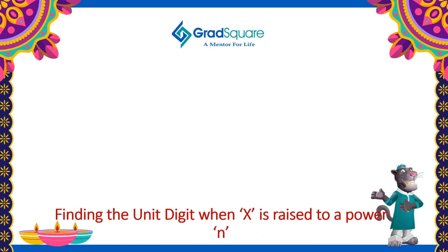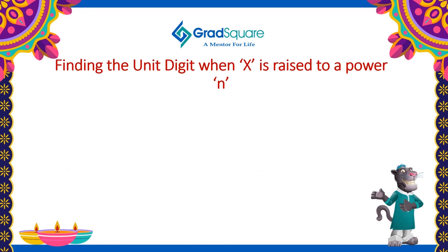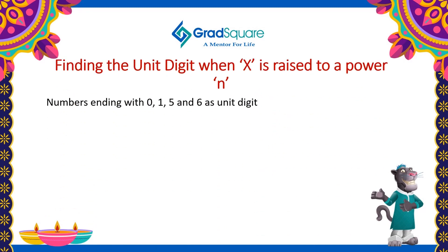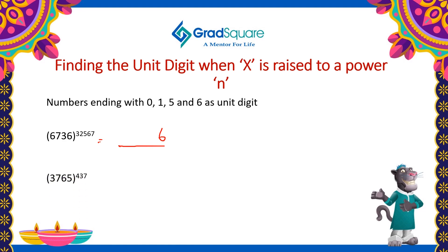How to find the unit digit of a number x when raised to a power n? When the given number ends with 0, 1, 5 and 6 as the unit digit, the resultant will have the same number as the unit digit. In the first example, the unit digit of the given expression is 6, so the resultant will also have 6 as the unit digit. Similarly, in the second example, the unit digit of the given expression is 5, hence the resultant will also have unit digit as 5.